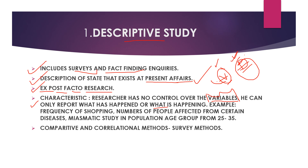Other examples include: frequency of shopping according to the season, number of people affected by certain diseases in certain seasons, and a myasthenic study of the population in the age group 25 to 35, just describing which dominant symptoms are present in that age group. Descriptive research also uses comparative and correlational methods, as well as survey methods.